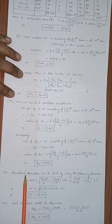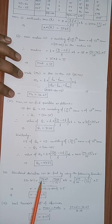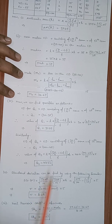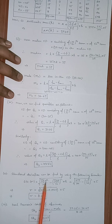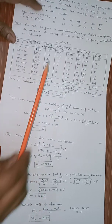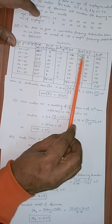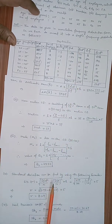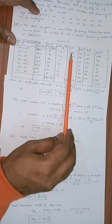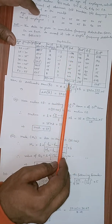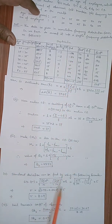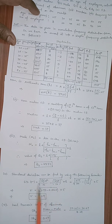To find the standard deviation, I applied the grouped data formula. Additional columns were calculated: f×d and f×d². Using the step deviation method formula: σ = h × √[(Σf·d²/Σf) − (Σf·d/Σf)²], and putting in the calculated values, the standard deviation σ = 8.2429.